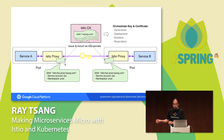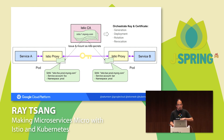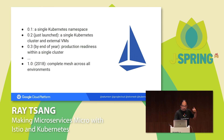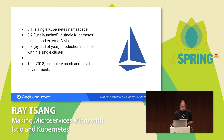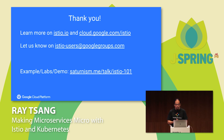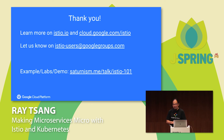Finally, remember: Istio has a certificate authority that automatically rotates certificates for proxies and establishes mutual TLS on a trustless network, without requiring any code changes. Istio gives you visibility into your application, a single control plane for resiliency and routing rules, and removes the need for client-side logic in your application. To learn more, visit istio.io and join the user group. You can find all the demos, code, and labs at saturnism.me/talk. Thank you so much for being here.